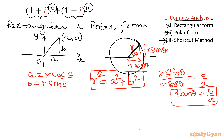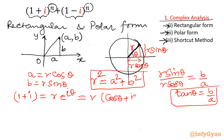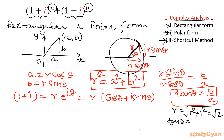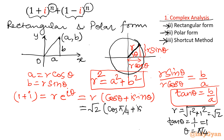So for 1 plus i, I will write it in the form r·e^(iθ) or r(cos θ + i sin θ). Here a is 1, b is 1. So r equals the square root of 1² plus 1² which is root 2. Tan theta equals 1 over 1 equals 1, so theta equals pi by 4. Therefore 1 plus i equals root 2 times (cos π/4 plus i sin π/4). This is the advantage of converting rectangular into polar form.